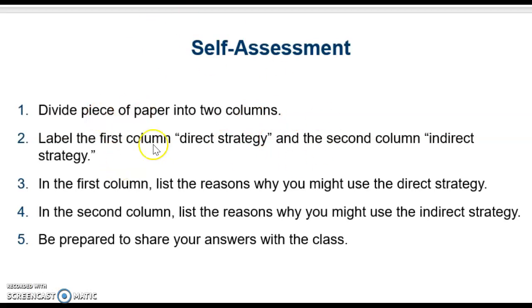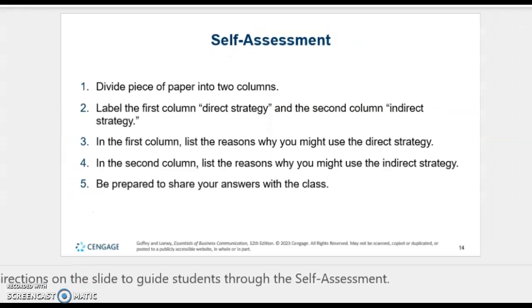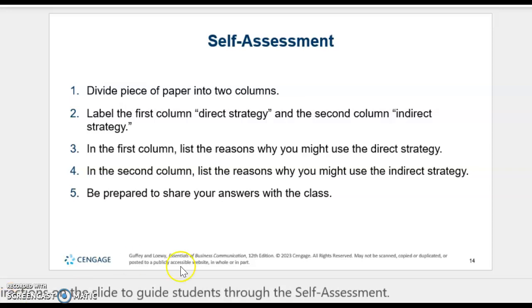Here is an exercise you can do. Divide your paper into two columns — label the first column 'direct strategy' and the second column 'indirect.' In the first column, list the reasons why you might use the direct strategy, and in the second column, list why you might use indirect. You can do that as practice to help review what we learned. You may want to pause and do that, but I'm going to go ahead and show you those answers.